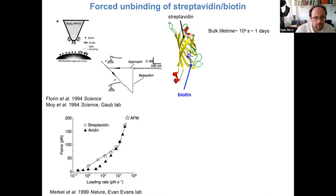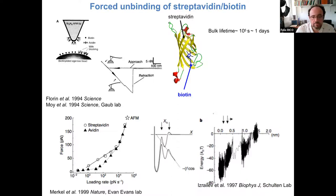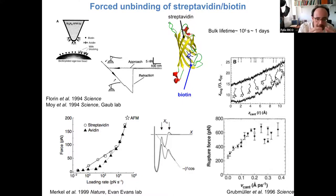This system was measured experimentally by different techniques, and soon after, molecular dynamics simulations were applied by the group of Klaus Schulten, showing that the energy landscape — interpreted as different barriers being crossed during unbinding — was reproduced in simulations. The group also described the atomic processes during the unbinding events.